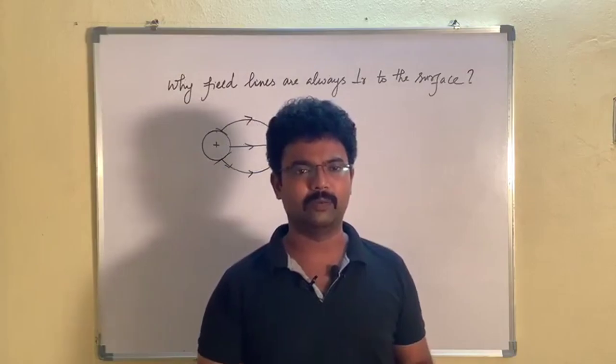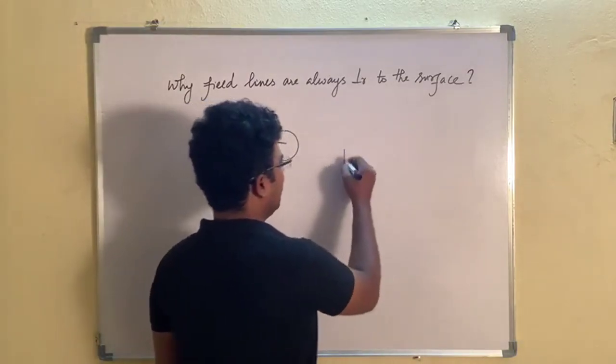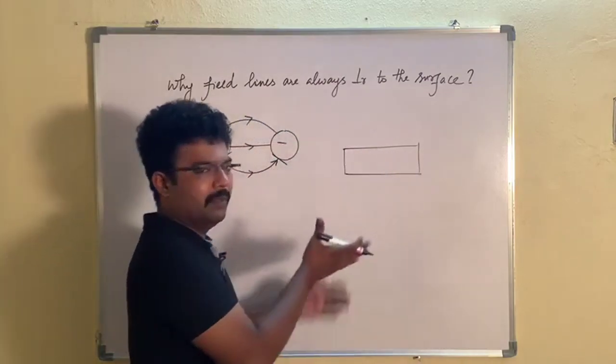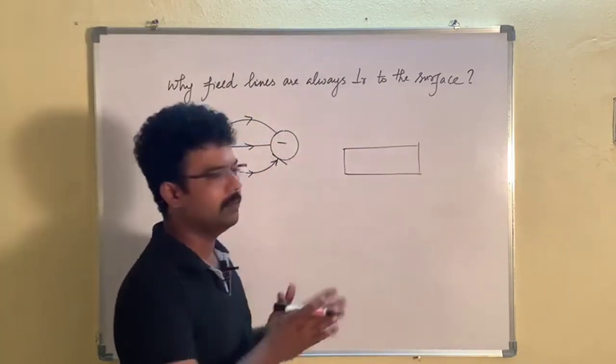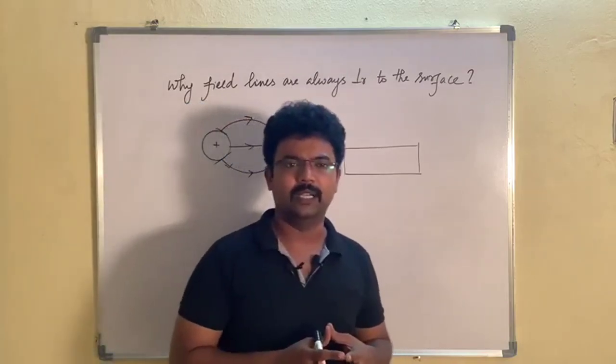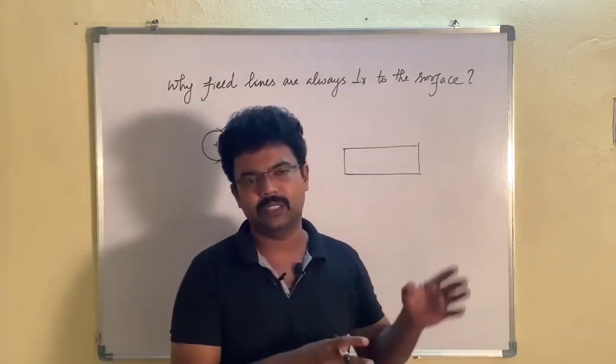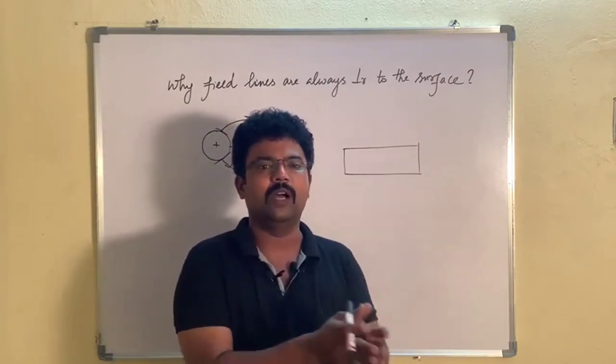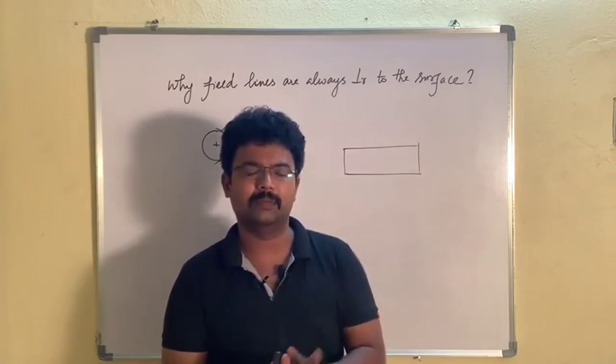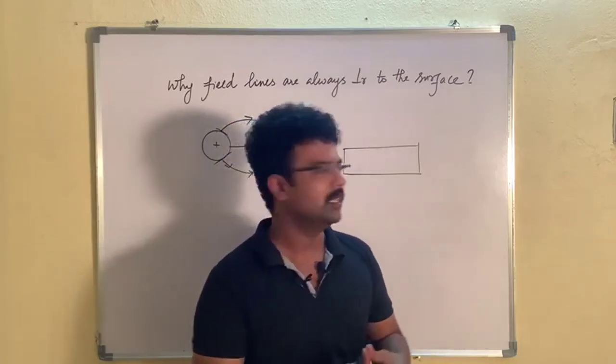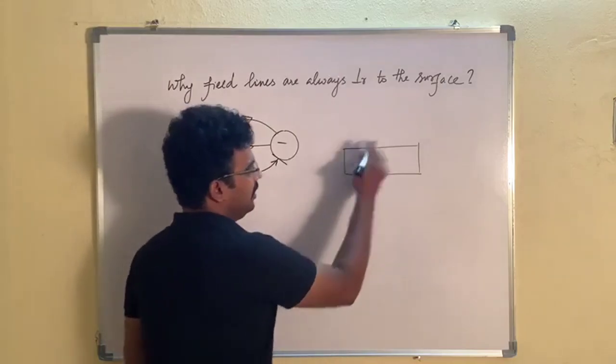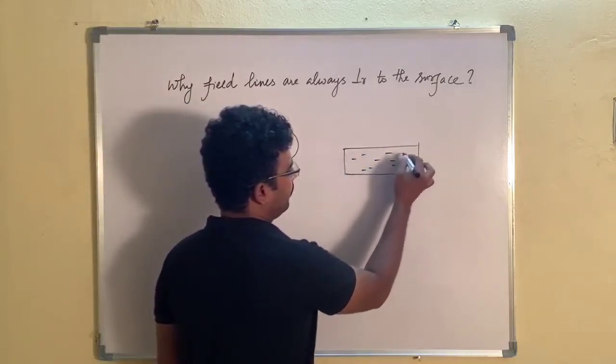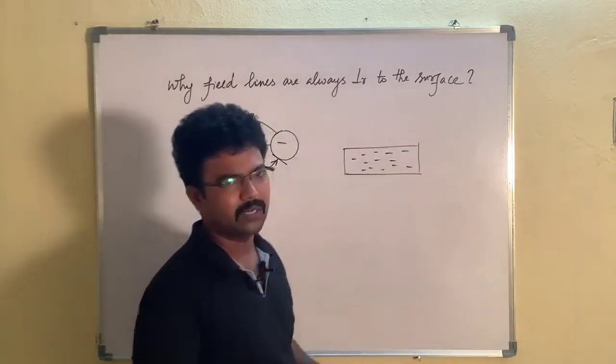We will see what is perpendicular. We can assume a conductor. This is basic, but if we look at the details we can understand this. Let us assume we start a system. If you look at the conductor, imagine there are many electrons. One conductor.